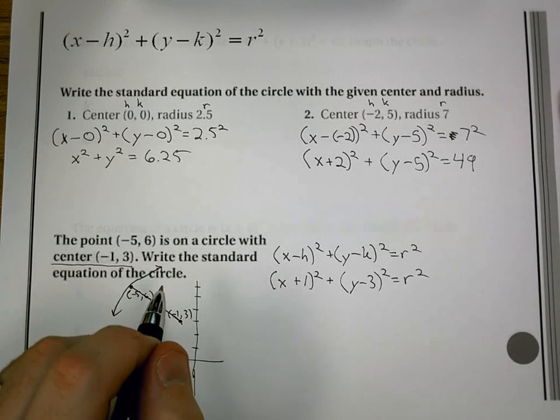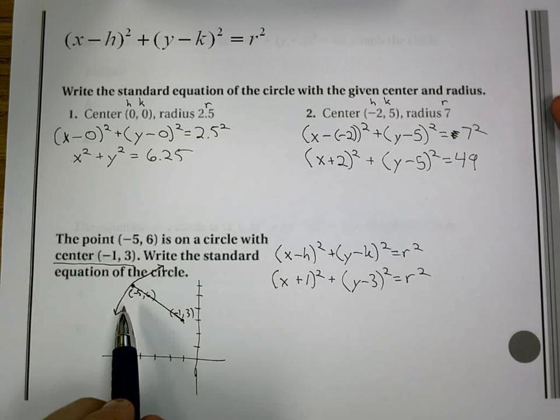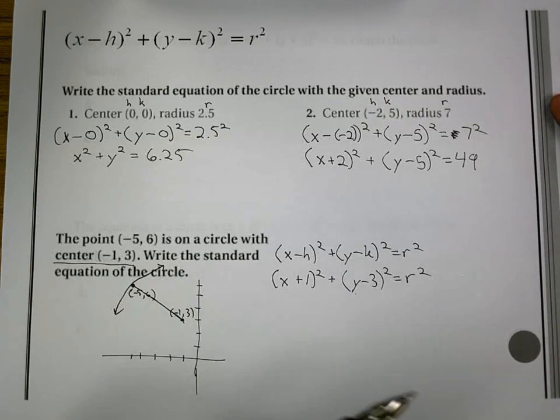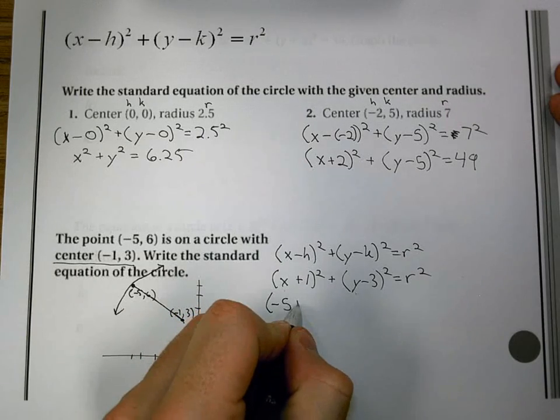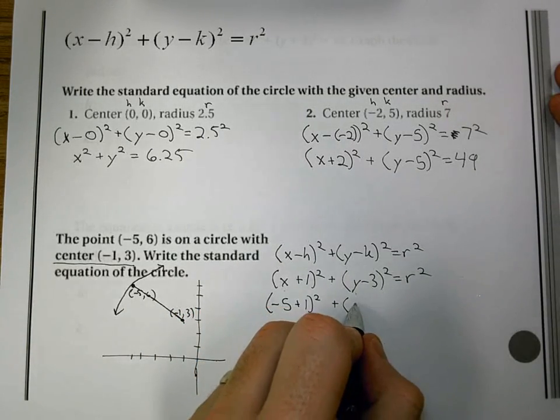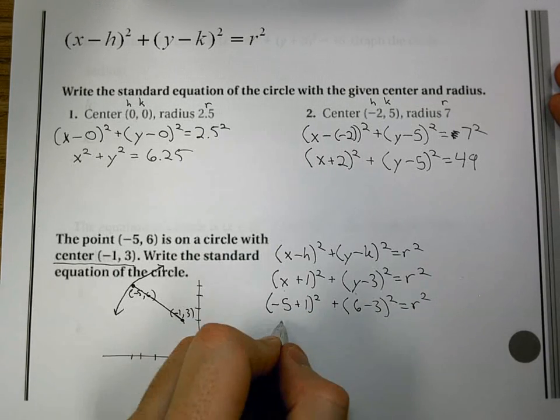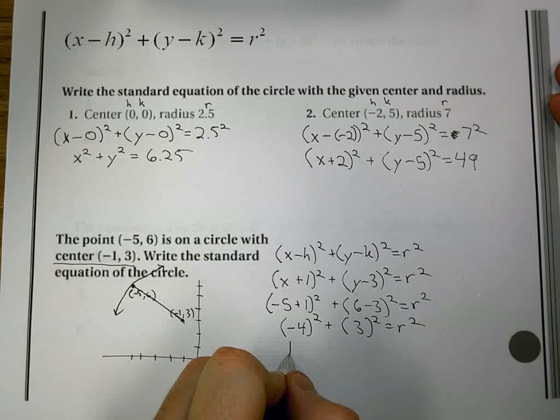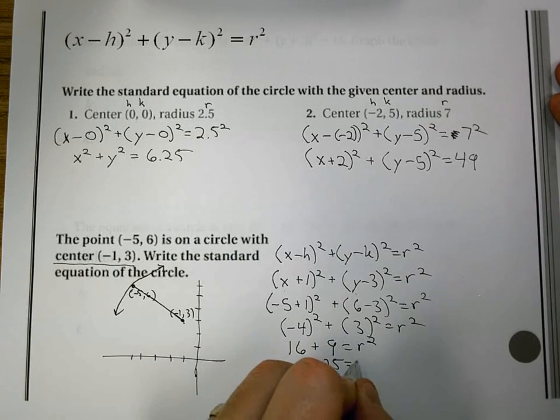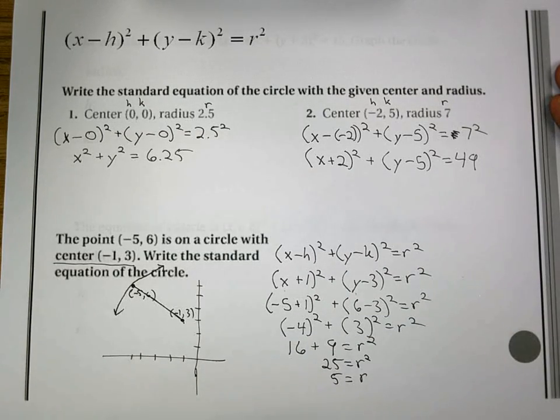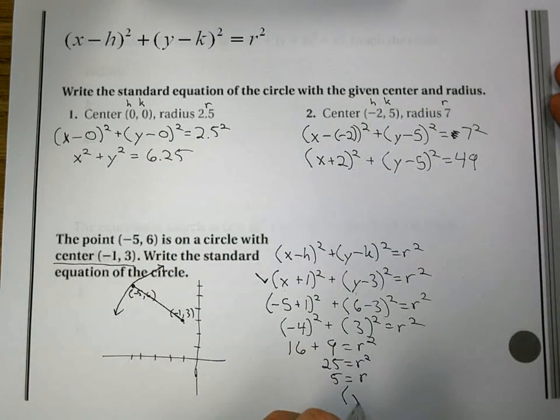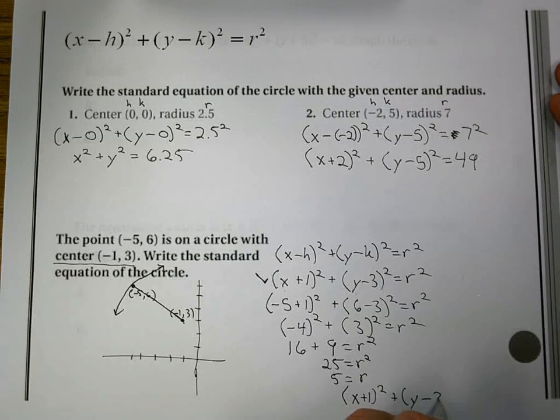Because we said that (x,y) is a point on the circle. Well, that's a point on the circle. So if we plugged in -5 and 6 in for x and y, solve for r, we would then have our radius and we could write the equation. So I get (-5+1)² + (6-3)² = r². That becomes (-4)² + 3² = r². 16 + 9 = r². 25 = r², and r = 5. So our radius is 5. Now to get my answer, I plug it back into this equation. And it becomes (x+1)² + (y-3)² = 5², which is 25.